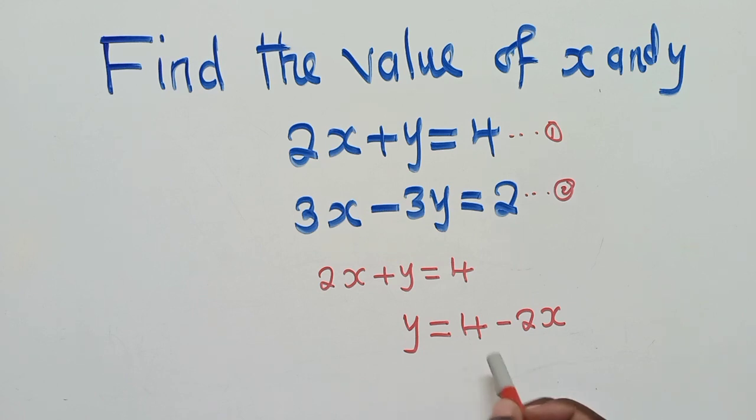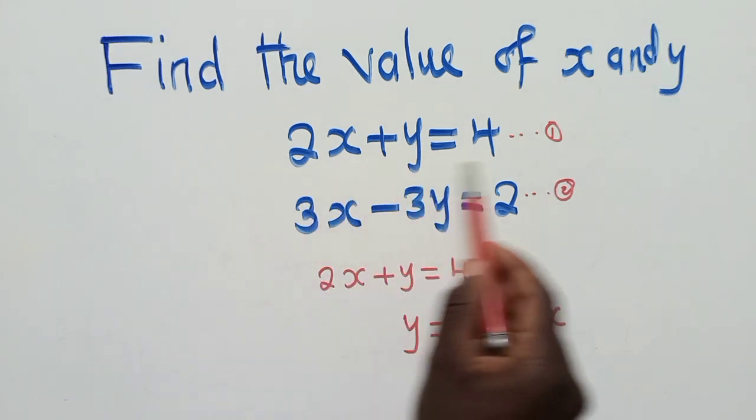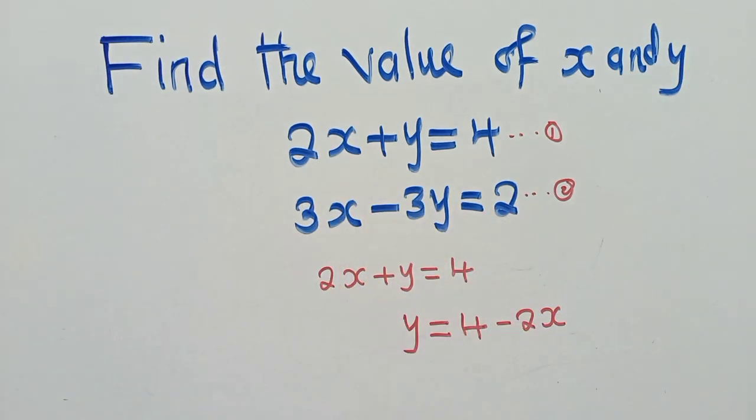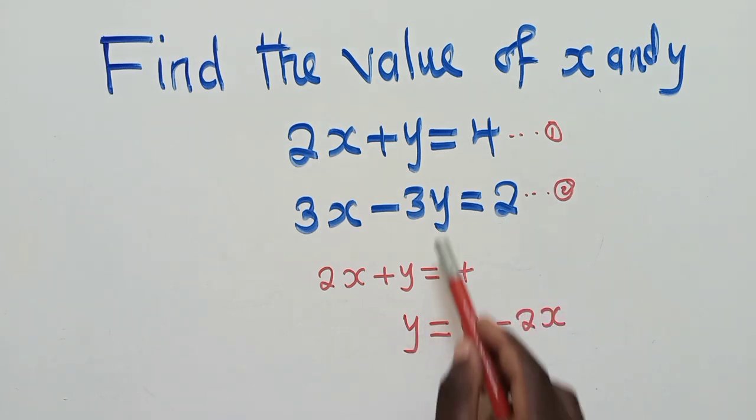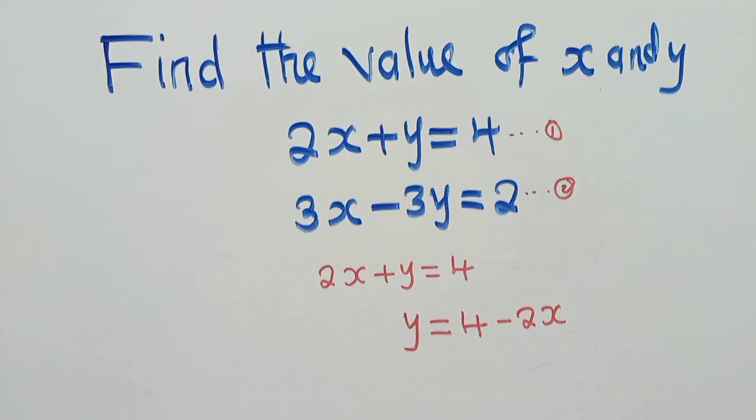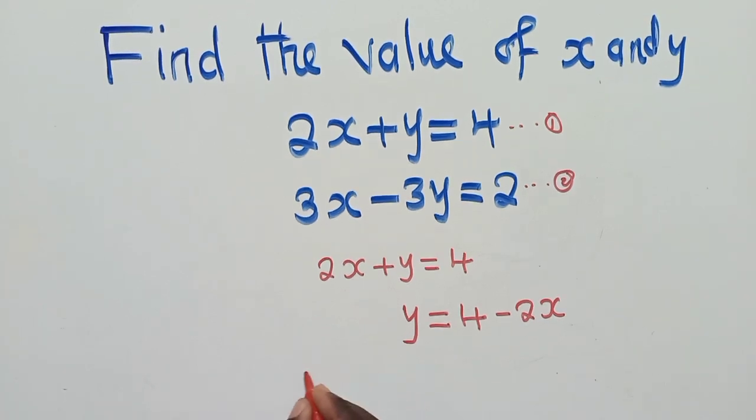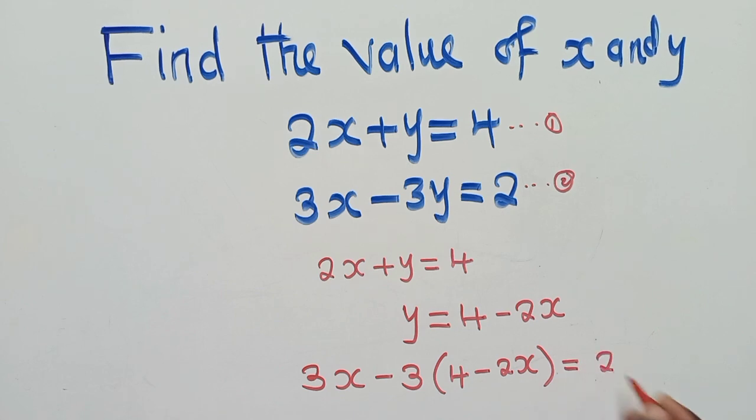After reaching this point, we now go to equation 2. We know that this is equation 1. This is equation 2. In equation 2, we substitute where y is here. We substitute this. So we have 3x minus 3, 4 minus 2 there inside the brackets is equal to 2.